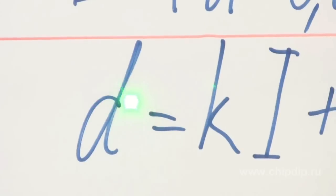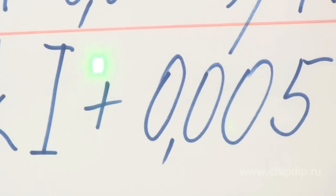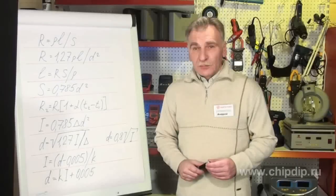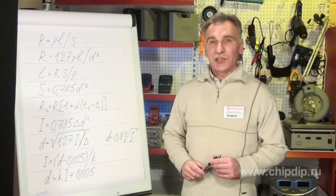Thus, the cable diameter will be D equals KL plus 0.005. This formula will help you to calculate right values and select required cable.